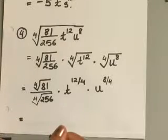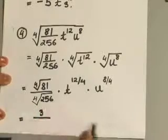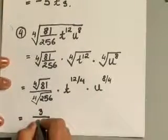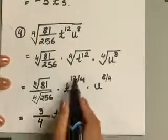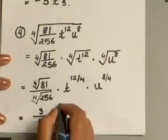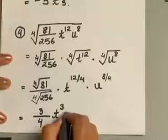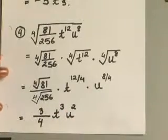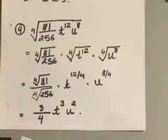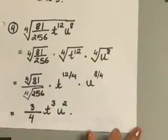So 4th root of 81 will be 3. 4th root of 256 will be 4. For your variables, 12 over 4 will give us 3, so you end up with t to the 3rd power. For your u, you have 8 over 4, which will reduce down to a 2. So you end up with 3 fourths, t to the 3rd, u squared, as your simplified form for the radical.